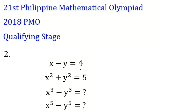We're going to solve this problem. Let me explain: these two are the given assumptions, and we want to find x cubed minus y cubed. But we also want to solve the harder problem: x to the 5th minus y to the 5th, and for yourself you can find x to any odd power minus y to that odd power — for example, 7 — and comment below. This is a PMO (Philippine Mathematical Olympiad) 21st, 2018 qualifying stage problem.